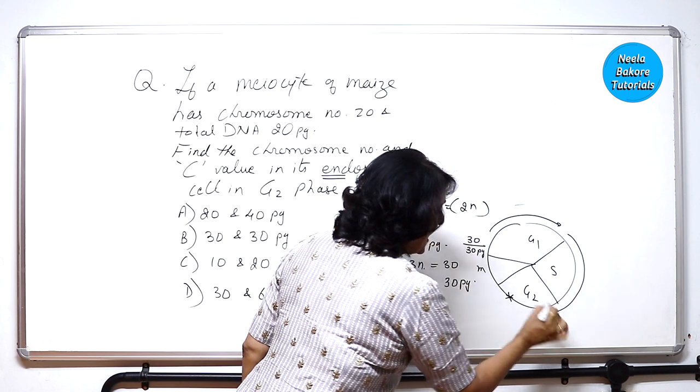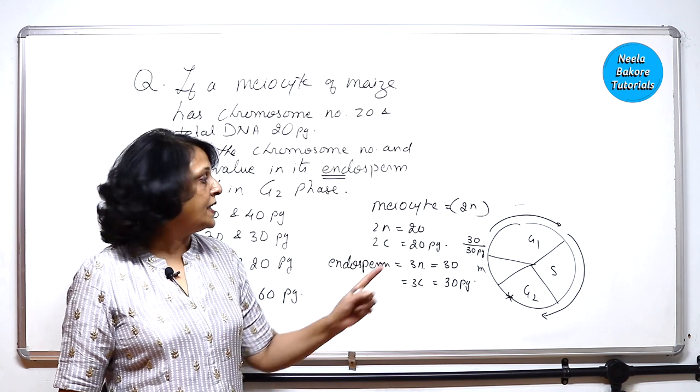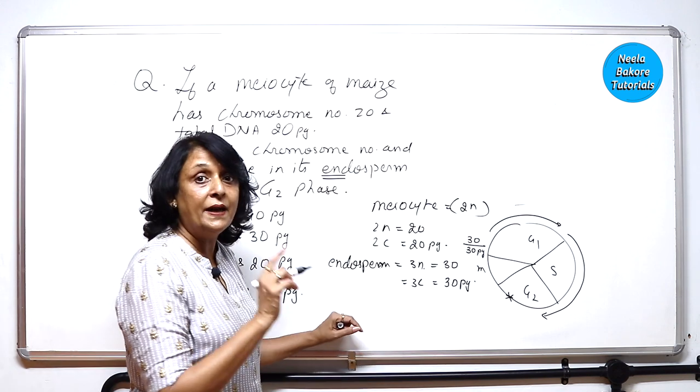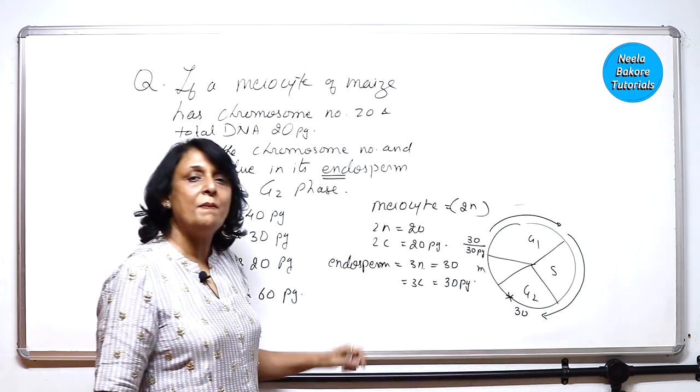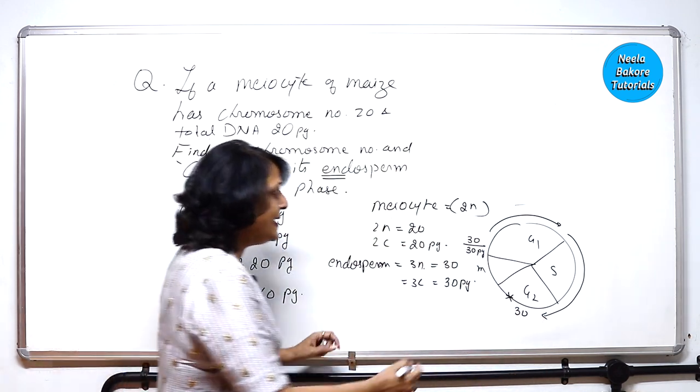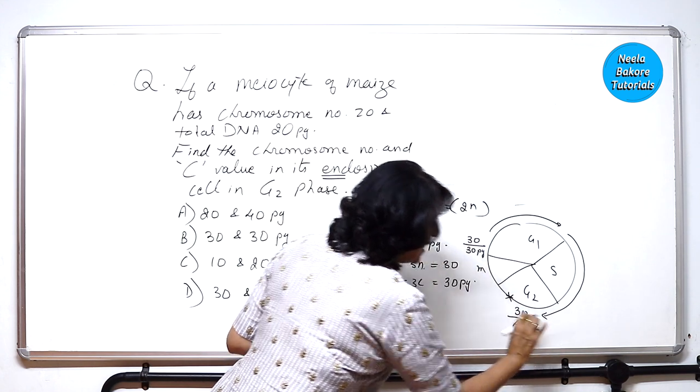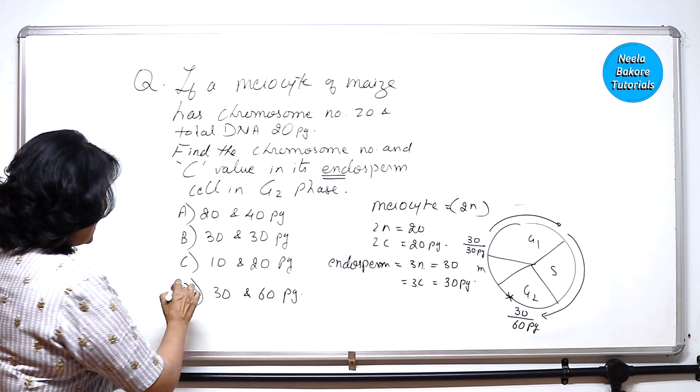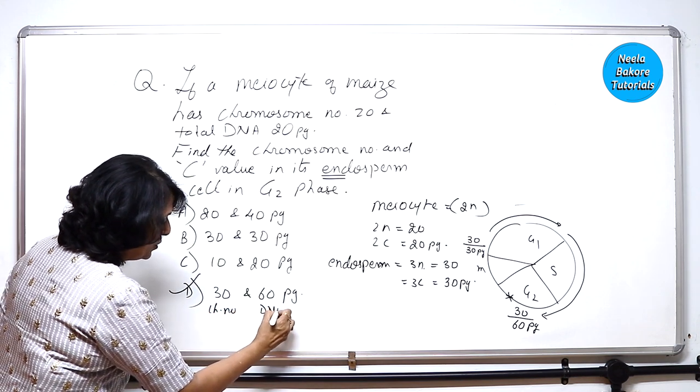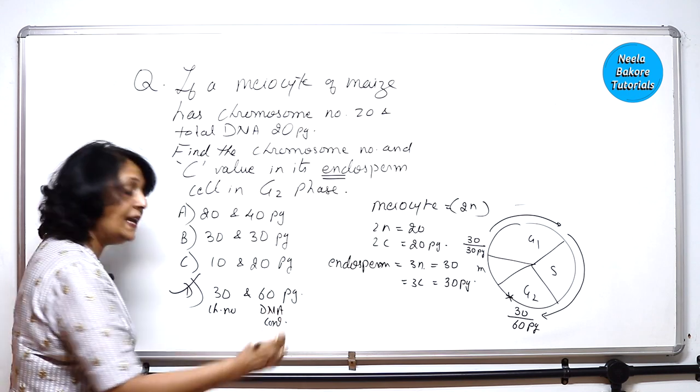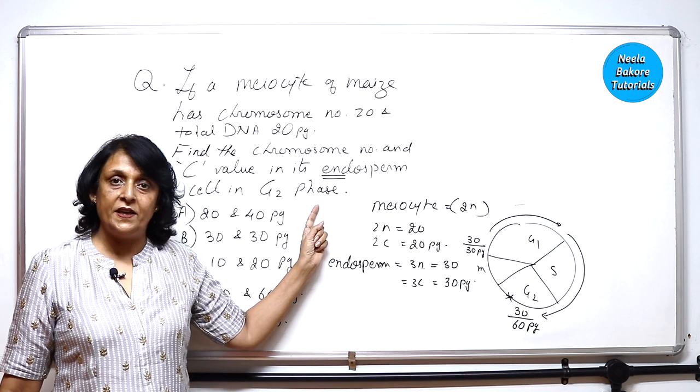When it completes S and comes into G2, DNA replication has taken place in S phase, but there is no change in the chromosome number. So chromosome number is going to remain same. DNA content is going to get double, that is it will become 60 picograms. So our answer is going to be, this is chromosome number and this is going to be the DNA content in its endosperm cell after G2 phase.